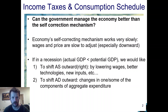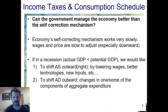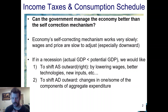We could have better technology or new inputs, lower wages — that would shift aggregate supply outwards. For aggregate demand, changes in consumption, investment, government expenditure, or net exports.